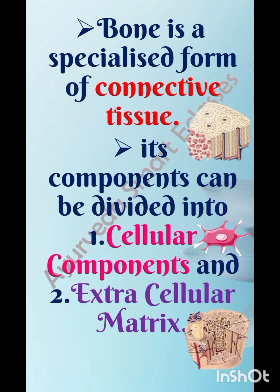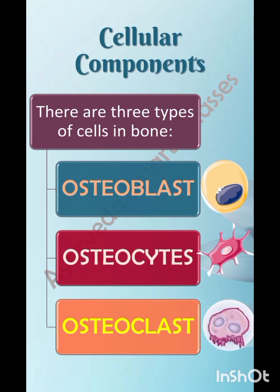Bone is a specialized form of connective tissue. Its components can be divided into cellular components and the extracellular matrix. There are three types of cells in bone: osteoblasts, osteocytes, and osteoclasts.